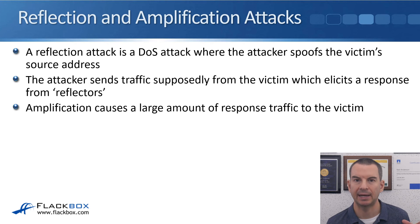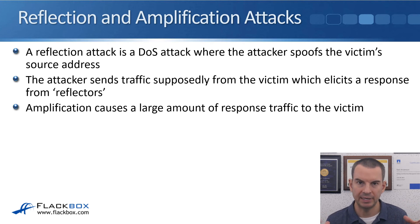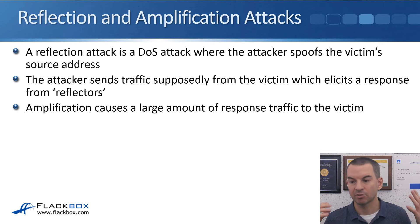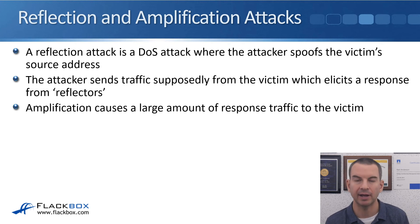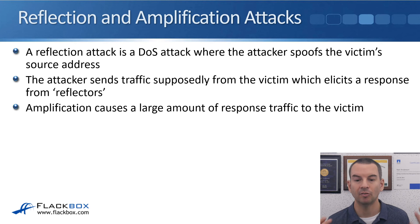In a reflection attack — a type of denial of service attack — the attacker spoofs the victim's source address and sends traffic supposedly from the victim, which elicits a response from reflectors. For example, if the victim has IP address 10.10.10.10, the attacker sends traffic with that as the source address to destination hosts, which send traffic back to the victim. Amplification causes a large amount of response traffic to the victim, creating the denial of service effect.